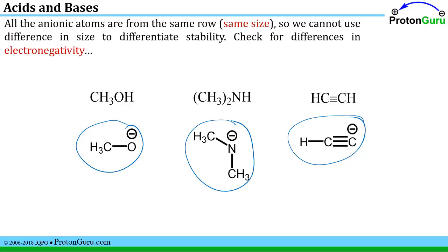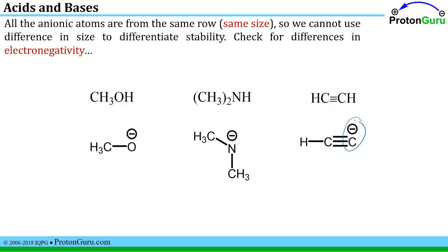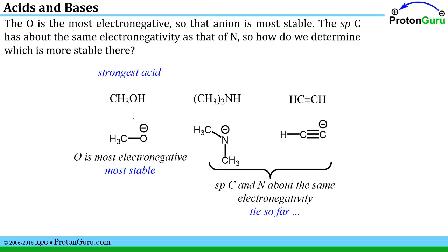In this series, all the atoms bearing the minus charge — carbon, nitrogen, and oxygen — are in the second row, so we cannot use size to differentiate them. We can check for differences in electronegativity: oxygen is more electronegative than nitrogen or carbon, so the oxygen-centered anion has the greatest stability and its conjugate acid is the strongest acid. However, the electronegativity of an SP hybridized carbon is about the same as that of an SP3 hybridized nitrogen, so we need another way to break that tie.